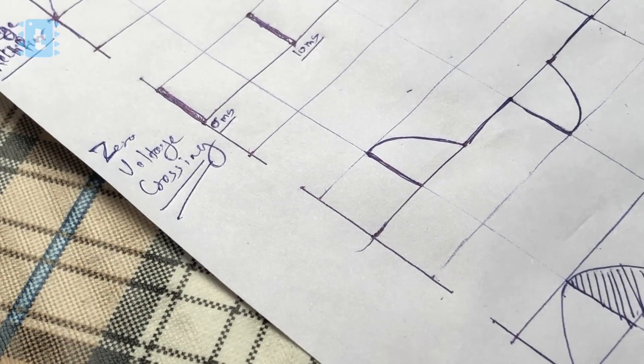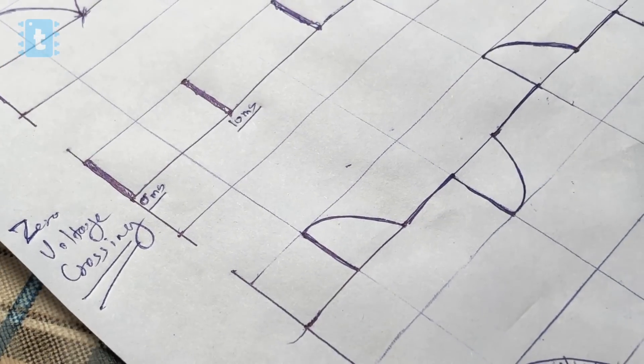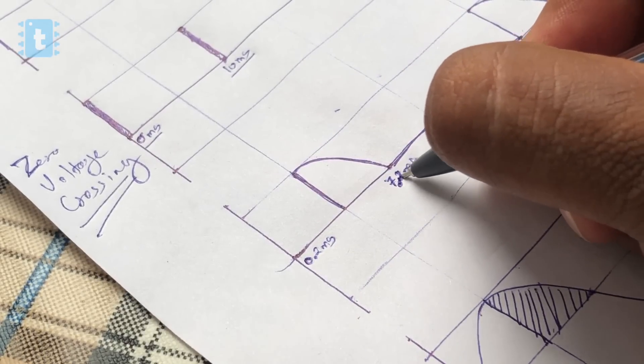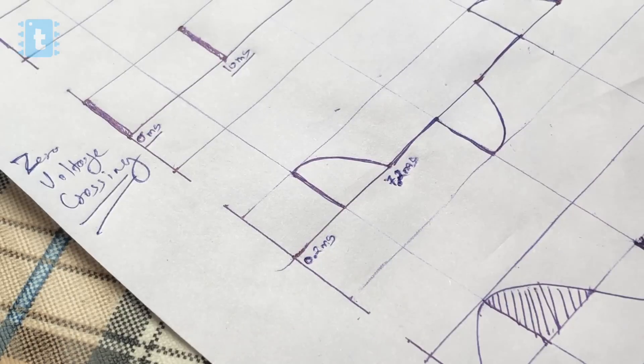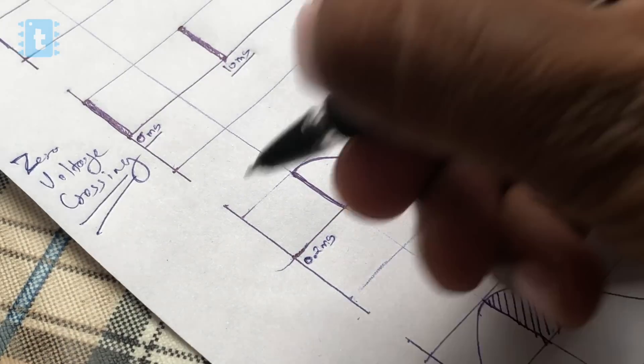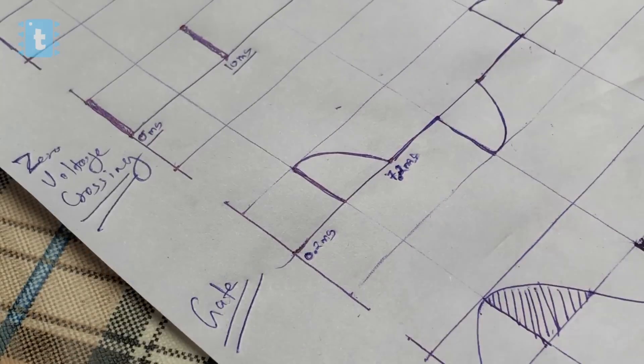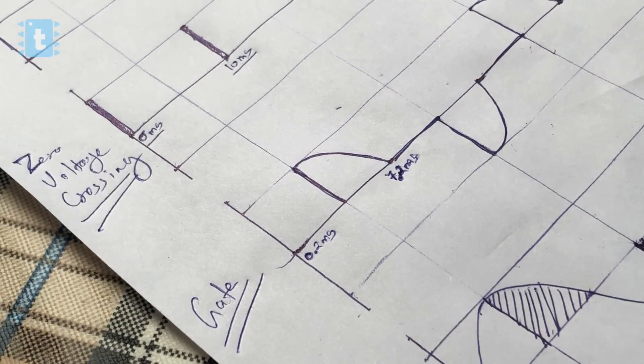But here rather than going into the extreme values of 0 to 10 milliseconds, I will select some safe values from 0.2 millisecond to 7.2 millisecond, considering the delay time caused by the functions used in the Arduino. So now we have to select at what time we should trigger the TRIAC, and for that we will take the zero voltage crossing as a reference.